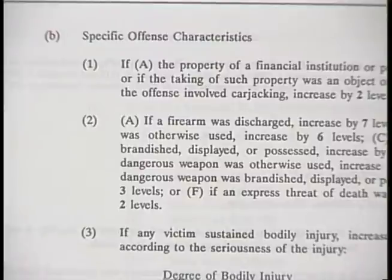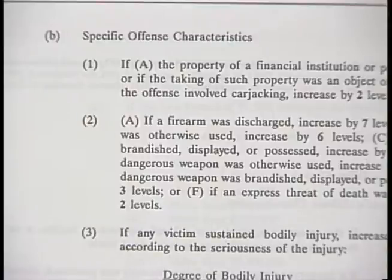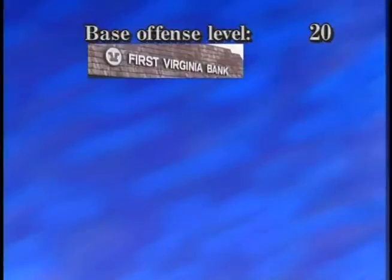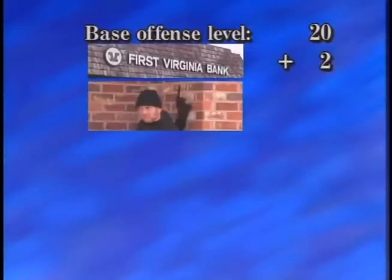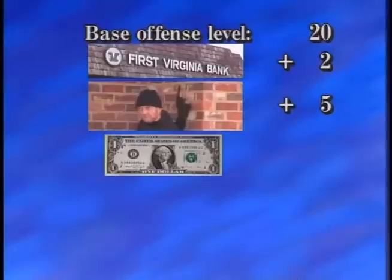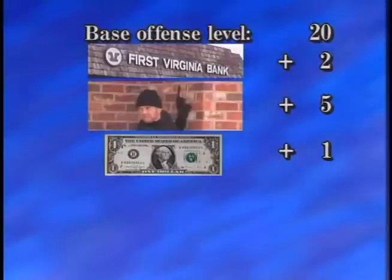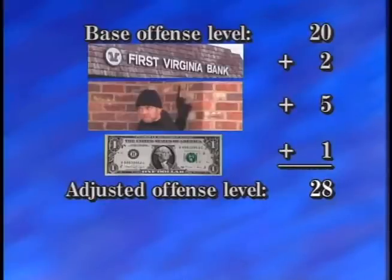The base offense level is then subject to adjustments for specific offense characteristics — certain commonly occurring circumstances associated with the particular offense. Our hypothetical robbery case involved the following specific offense characteristics: a financial institution was robbed, which increases the base offense level by two levels; the defendant brandished a gun, which increases it by five levels; and more than $10,000 but less than $50,000 was taken, which increases it by one level. When the base offense level for robbery is adjusted to reflect these specific offense characteristics, it results in an adjusted offense level of 28.